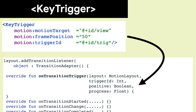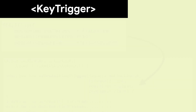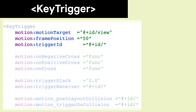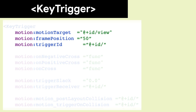It calls the onTransitionTrigger method of the addTransitionListener. Key Trigger has the same motion target and frame position as other keyframes. But Trigger ID is useful to identify your trigger to the callback.